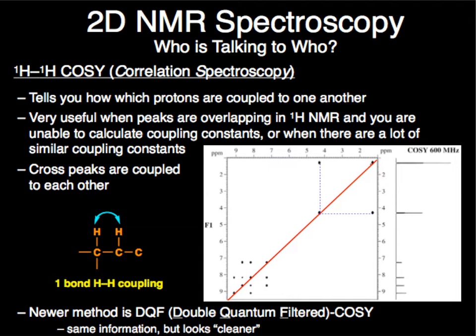So which protons are coupled to each other. Because the problem is coupling constants can be the same. Coupling constants can all be 7. I don't know who's who. So this is another bit of information that helps us really determine who's talking to who. Especially if things are overlapping. If things are overlapping, it helps a lot. Or if you're unable to calculate coupling constants or there's similar ones.